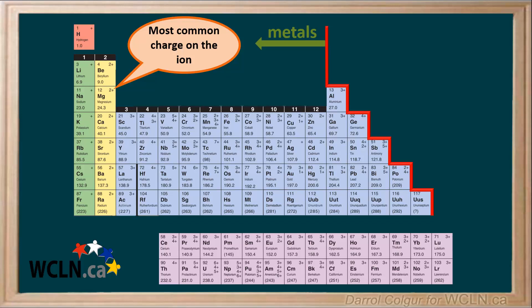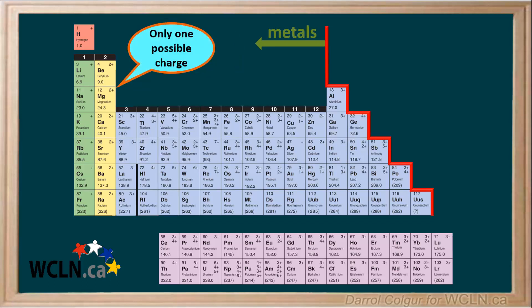For example, the most common ion of magnesium has a charge of positive 2. You may have also noticed that some of the metals, such as magnesium, have only one number on the top right. This means there's only one possible charge on its ion. Many of the other metals have more than one number on the top right, such as titanium. Ions of these metals have more than one possible charge.